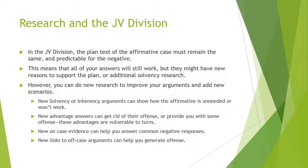In the JV division, the plan text of the affirmative case must remain the same and give the negative some predictability. This means most of your answers will still work, but the affirmative might have new reasons to support the plan or additional solvency research. However, you can do new research as well to improve your arguments and add new weapons to your toolbox. New solvency or inherency arguments can show how the affirmative is unneeded or ineffective. New advantage answers can get rid of their offense or provide you with some offense of your own, since these advantages are very vulnerable to being turned. New evidence on case can help you answer common affirmative additions, and new links to off-case arguments can help you generate offense.